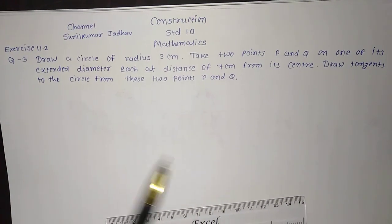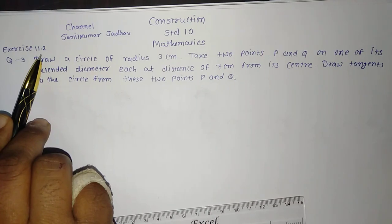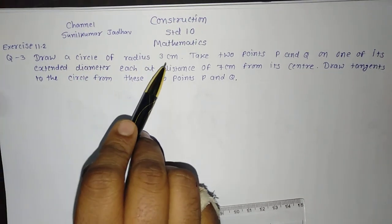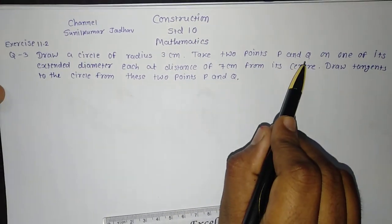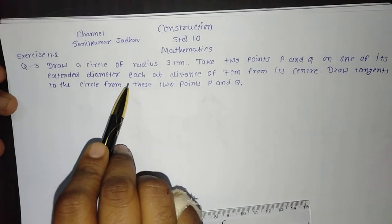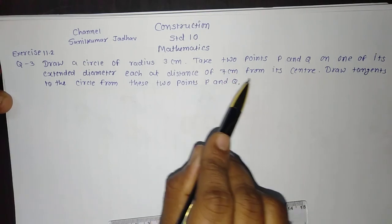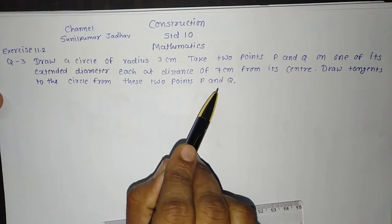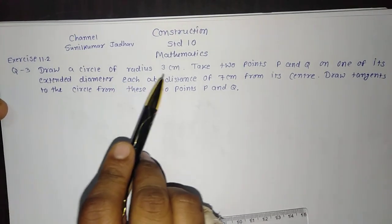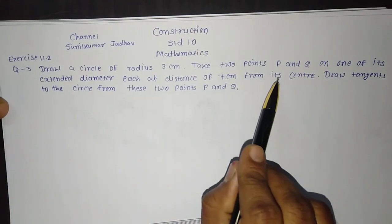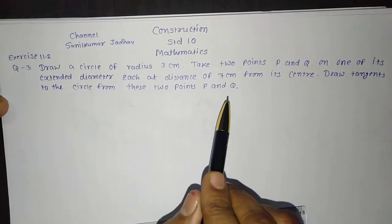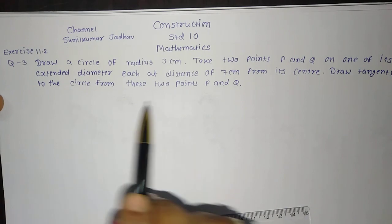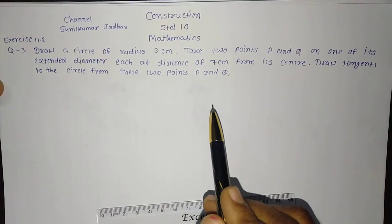This question is taken from Exercise 11.2, NCERT textbook, question number 3. Draw a circle of radius 3 centimeter. Take two points P and Q on one side of its extended diameter, each at a distance of 7 centimeter from its center. Draw the tangent to the circle from these two points P and Q. So first we draw the circle with 3 cm radius, take points P and Q on the extended diameter at 7 cm from center on either side, then draw the tangent from each point.